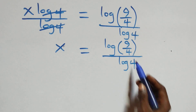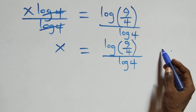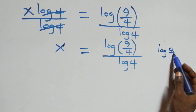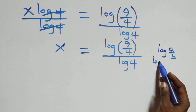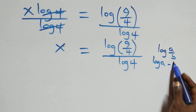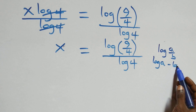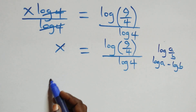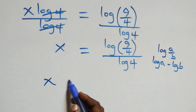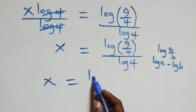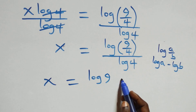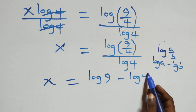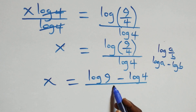This follows from the logarithm rule: log(a/b) is the same as log a minus log b. So what we have becomes x equals (log 9 minus log 4) over log 4.